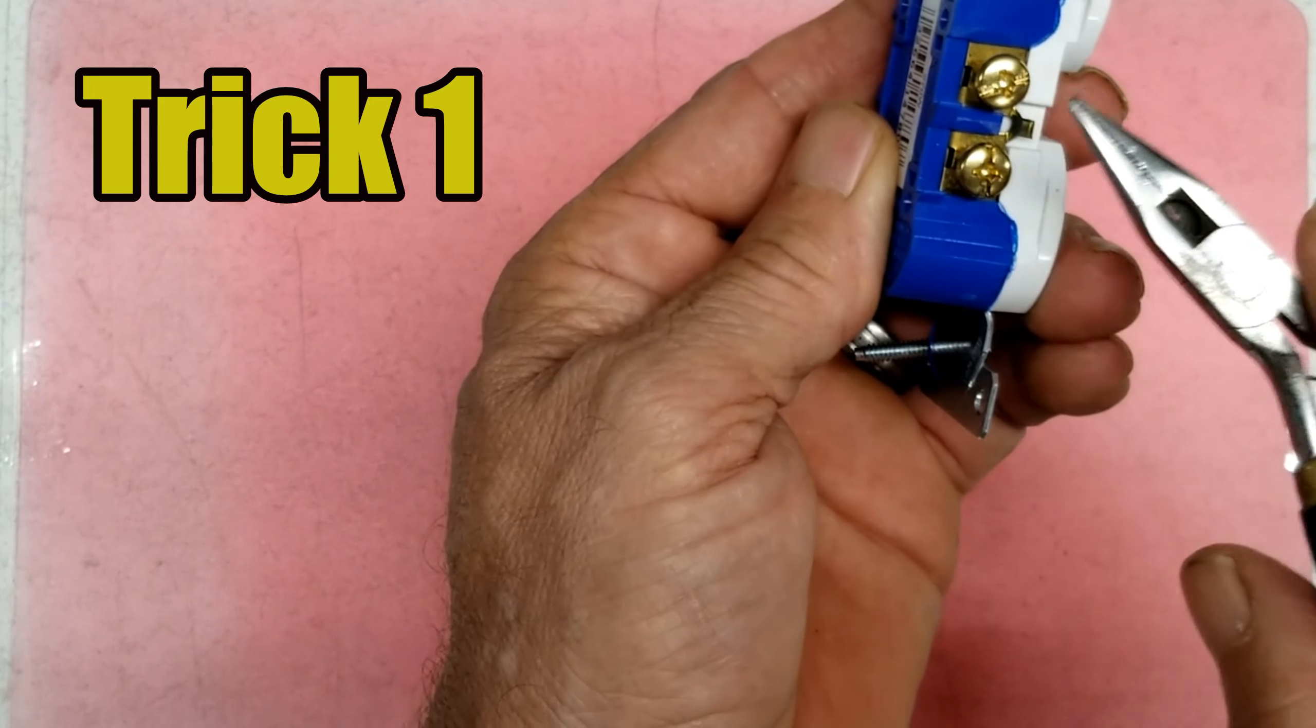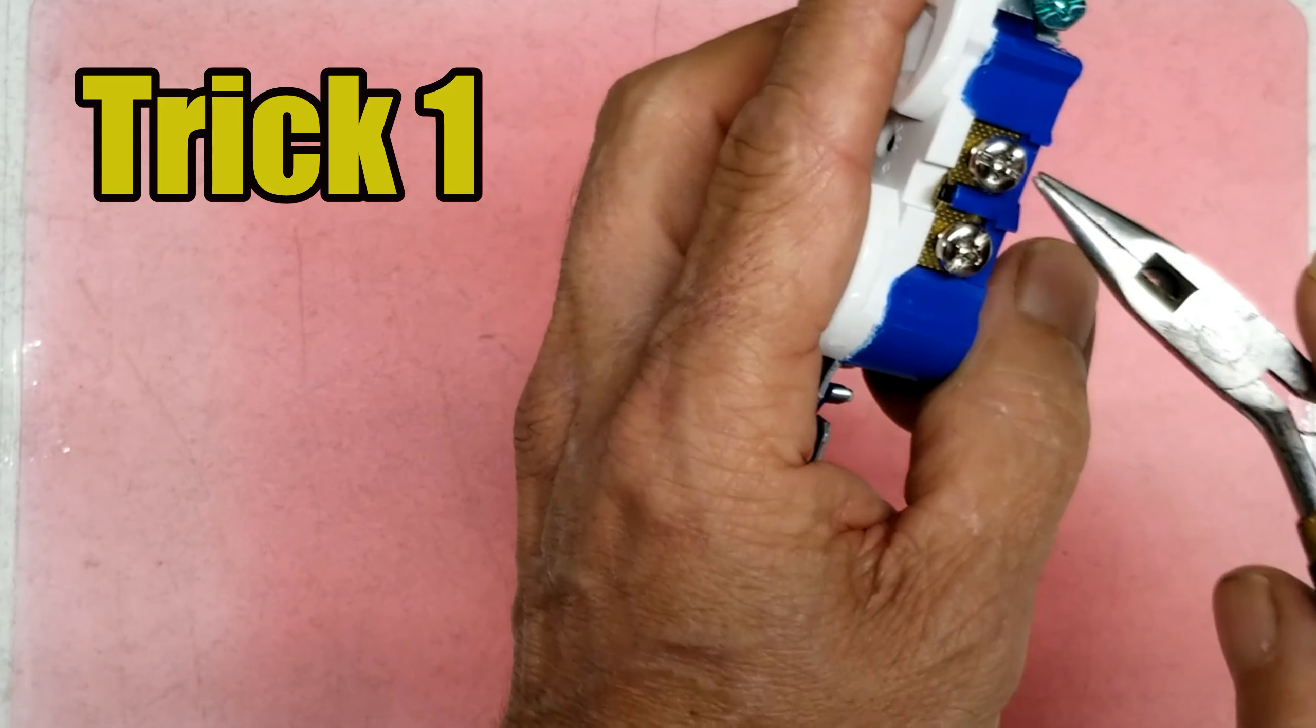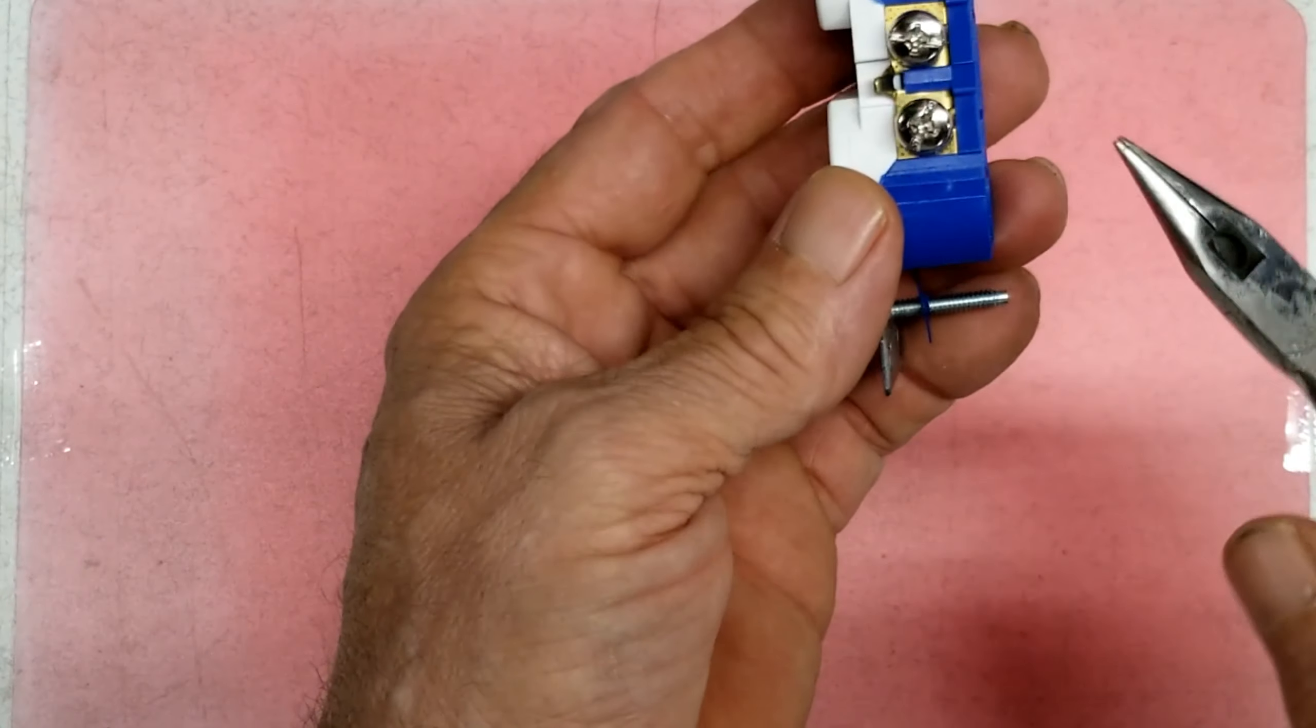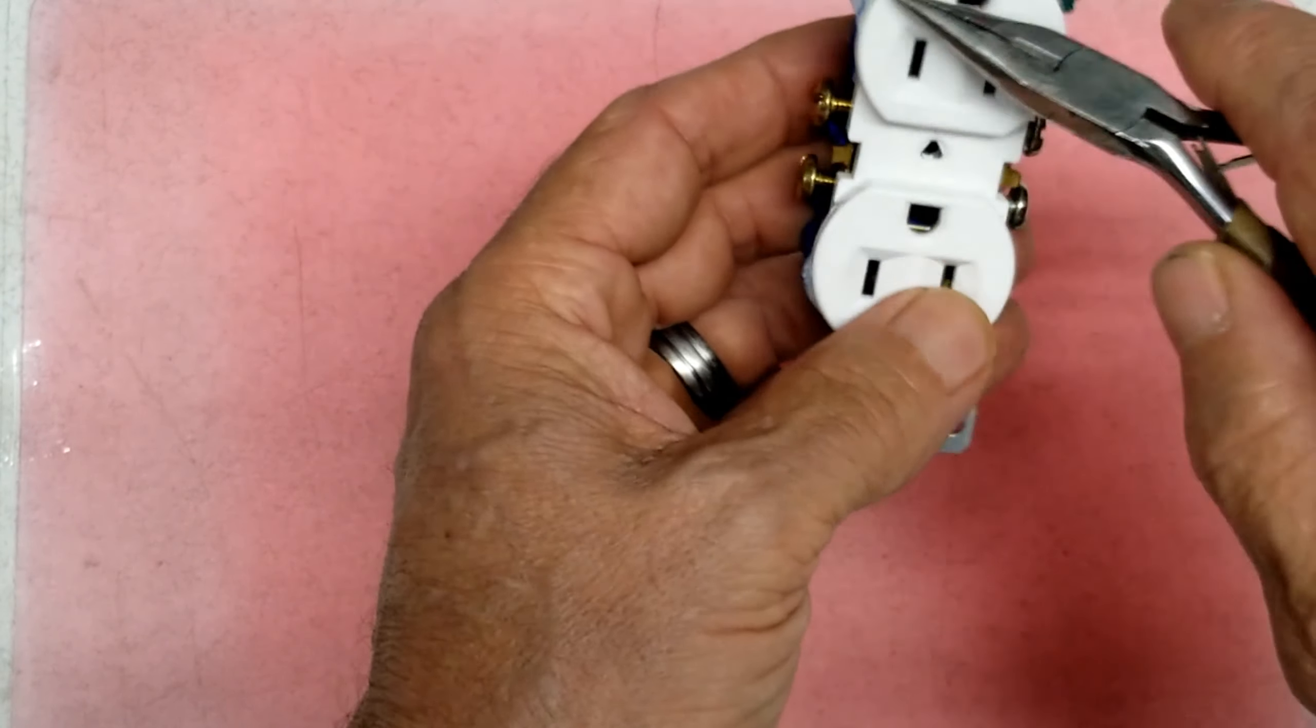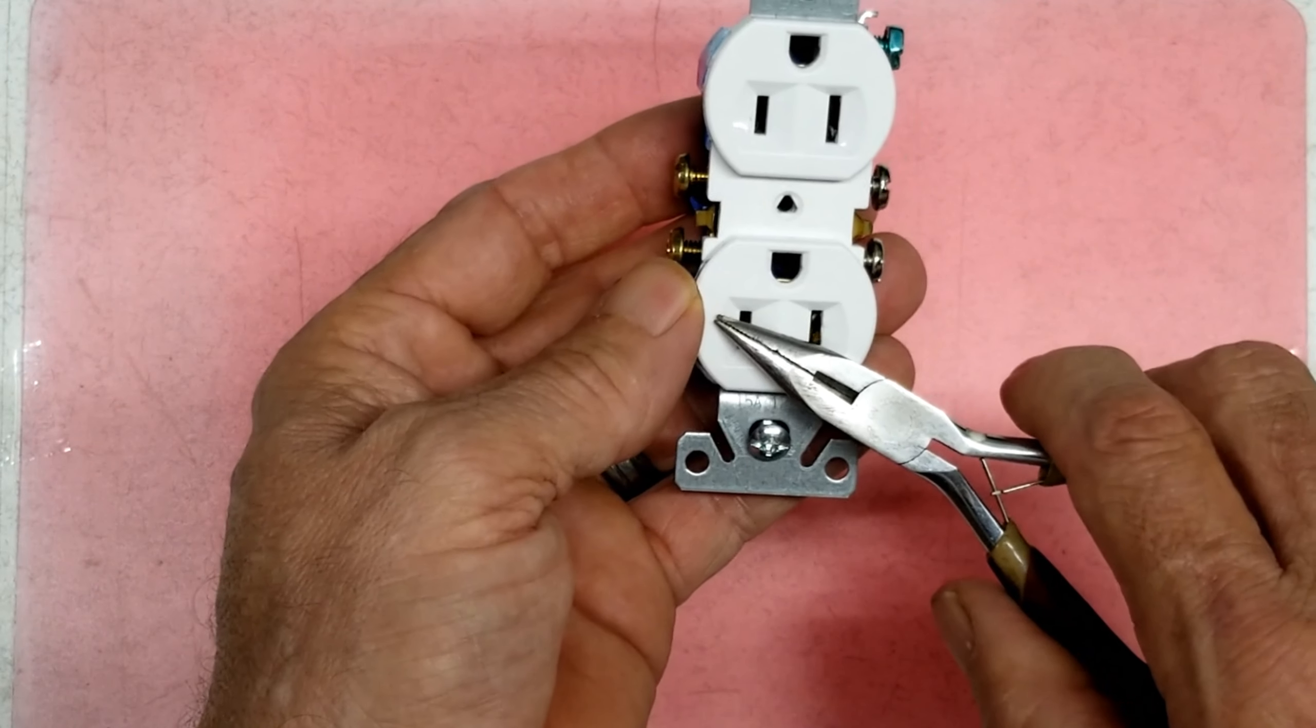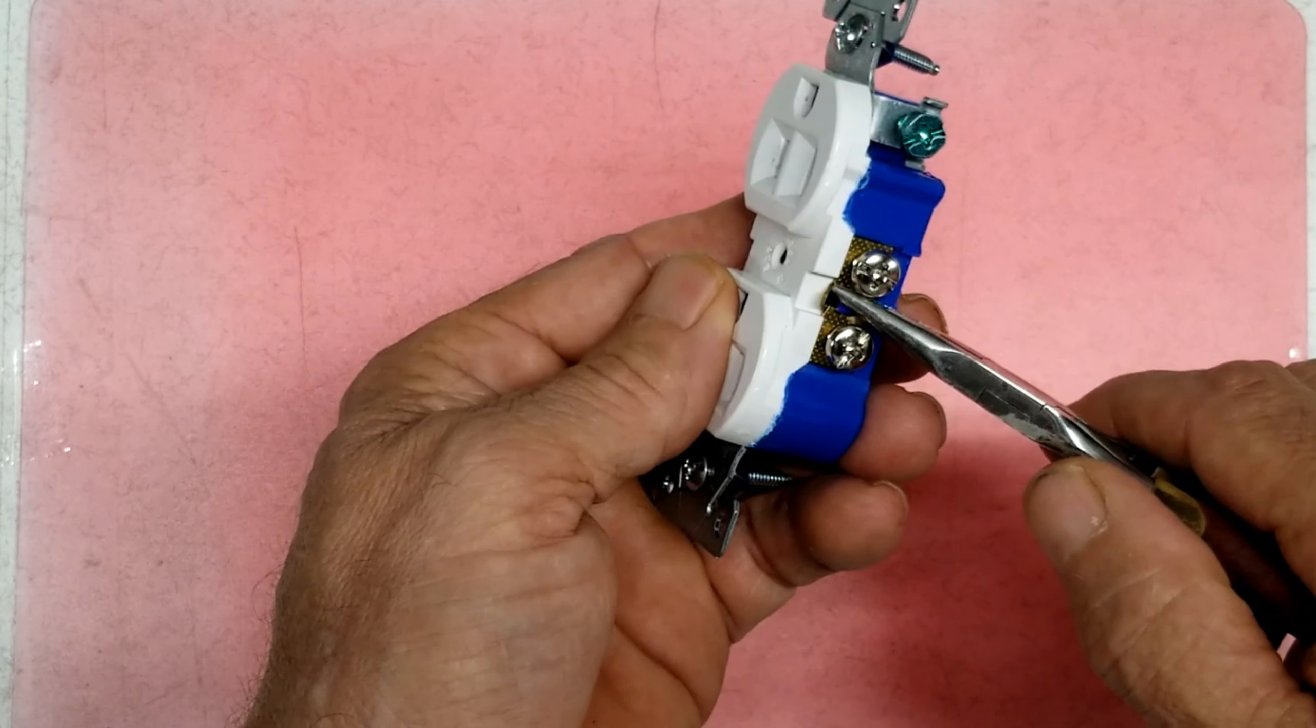When you do that, it separates these two outlets. Same way on the other side. So these would be two independent power sources. But for a normal outlet, they're connected all the time. So both is hot all the time. But that's if you wanted to make a switch on one and not on the other. You could separate the two.